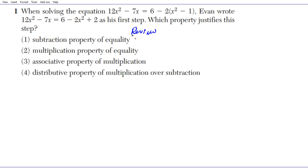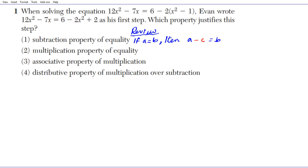The subtraction property of equality states: if a equals b, then if you subtract c from both sides of the equation, equality is preserved — so a minus c equals b minus c. This is applicable when solving an equation by subtracting the same number from both sides.